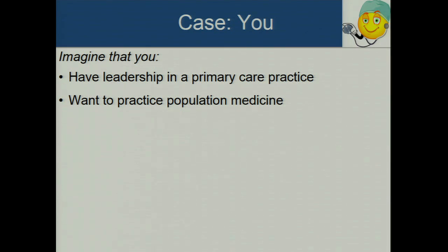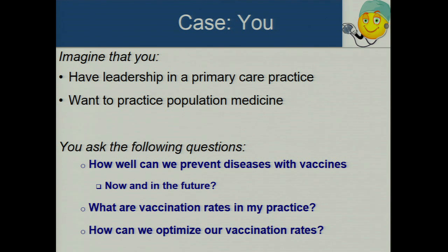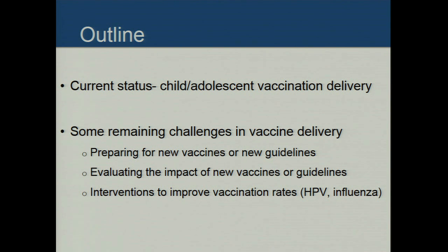I have no disclosures, and I'm going to start with a case — but this is a different kind of case. Imagine that you have leadership in a primary care practice and you want to practice population medicine. You ask: how well can we prevent diseases with vaccines now and in the future? What are the vaccination rates in my practice or in the country? And how can we optimize our vaccination rates? I'm going to talk about the current status of child and adolescent vaccination delivery and some remaining challenges.